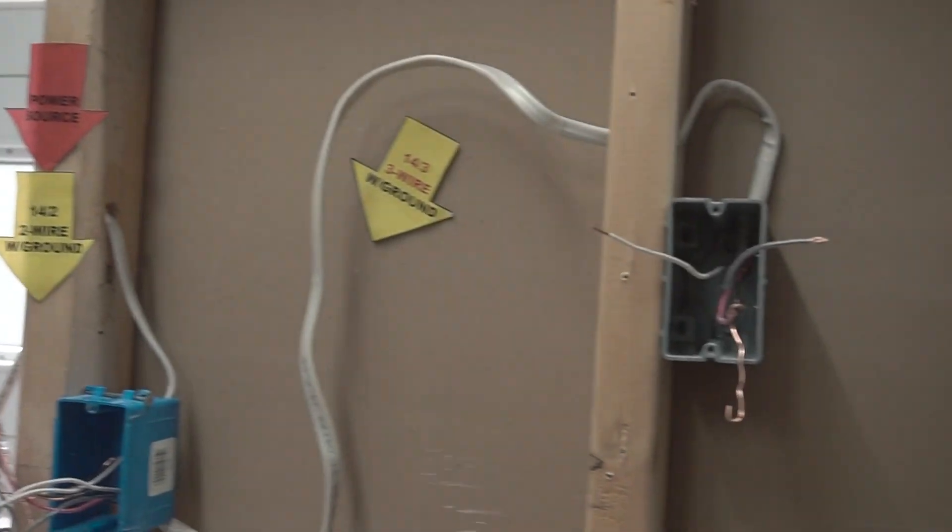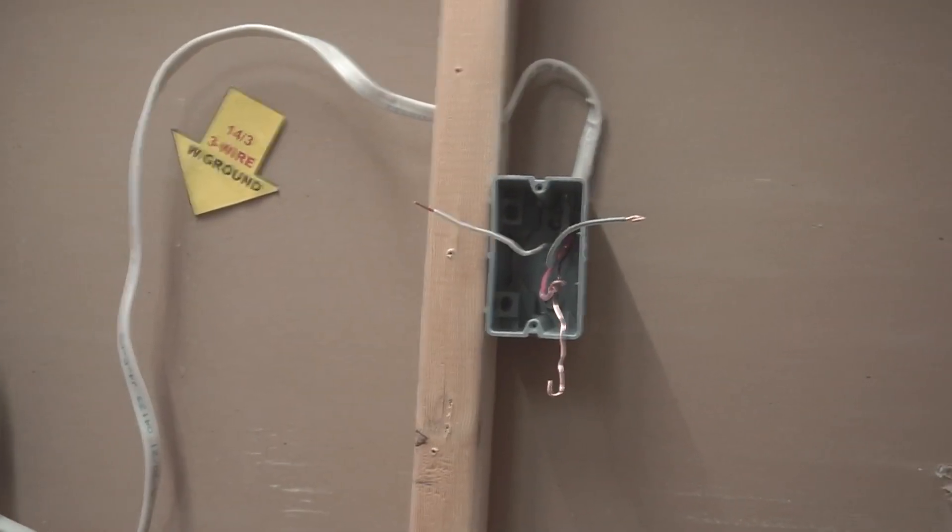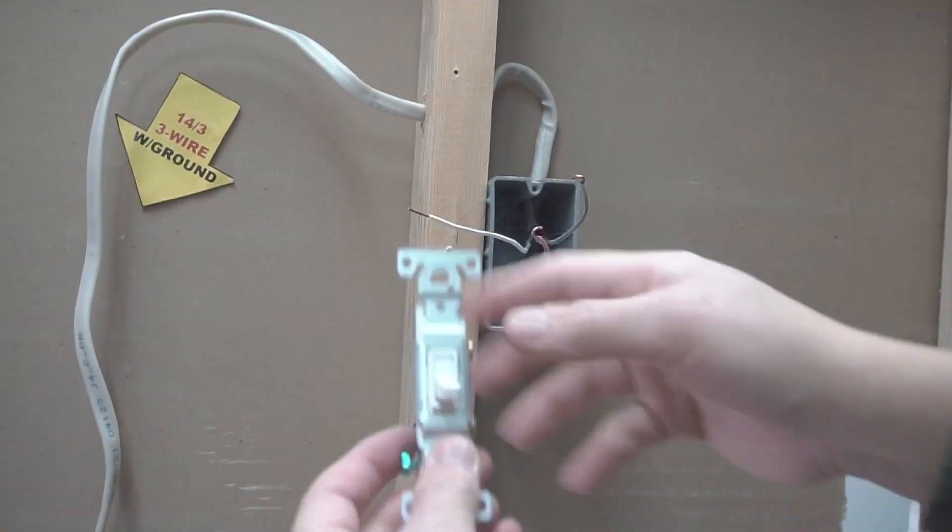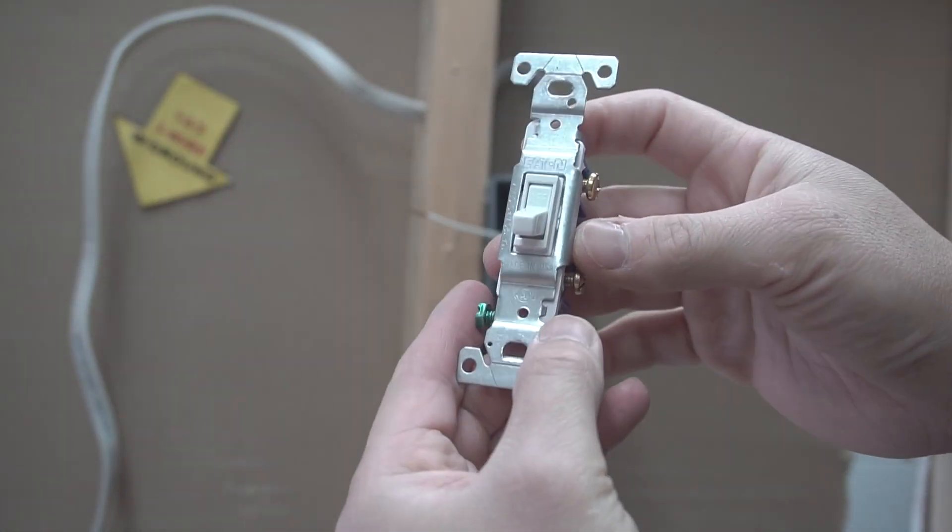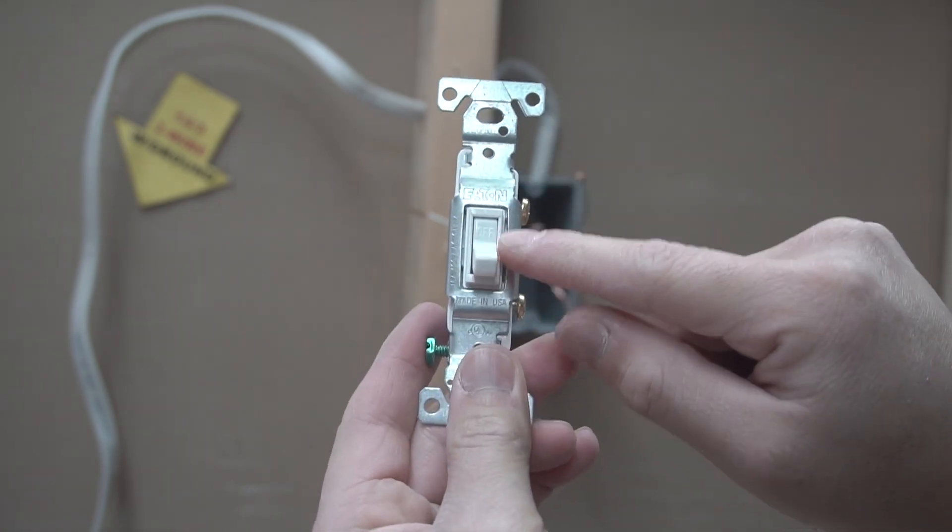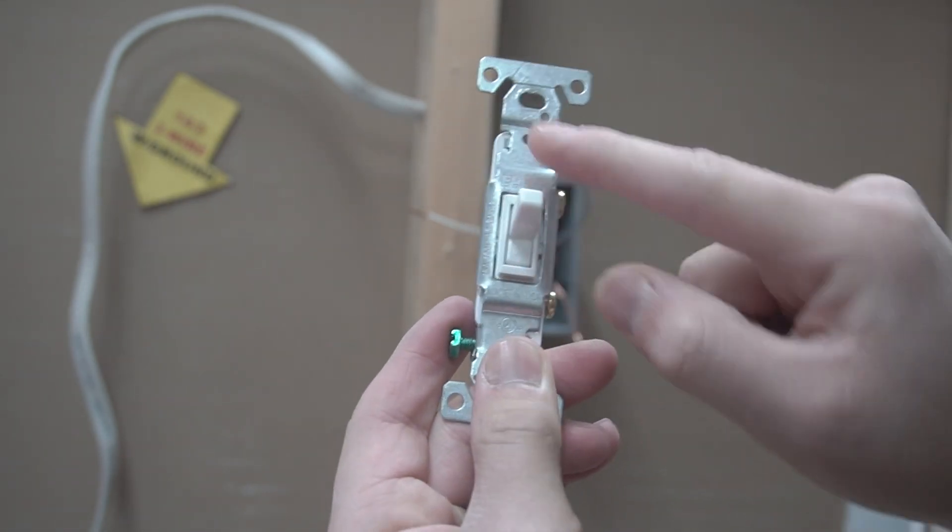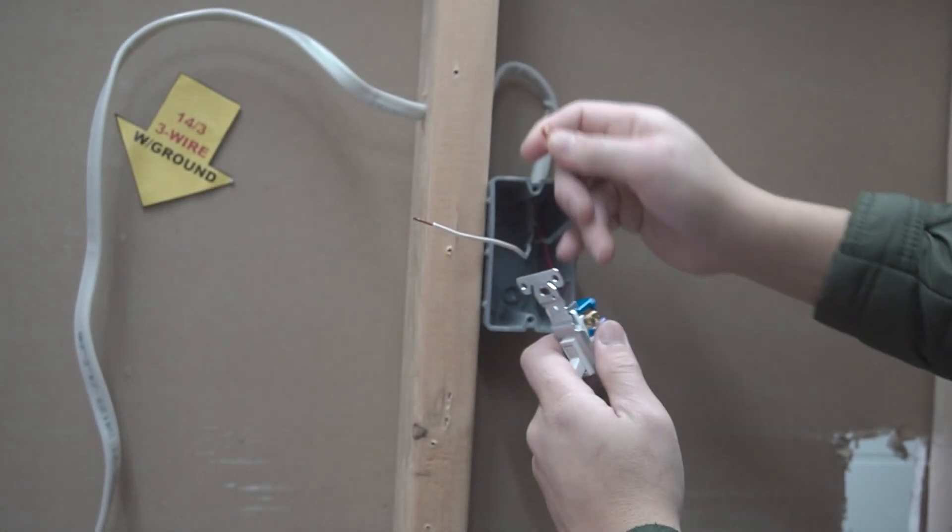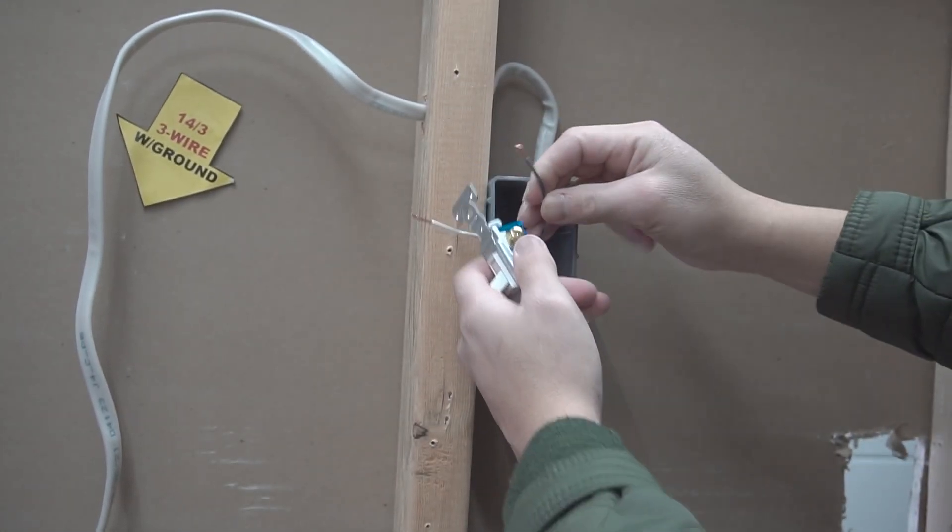Following that 14-3, let's go to this final J-Box right here. This should be nice and easy. Now take your switch. Make sure that it's in an upright position. It's setting off and on right there, nice and upright. Take the black wire from the 14-3 and hook it to the top terminal, the brass top terminal. Put it in a clockwise manner.